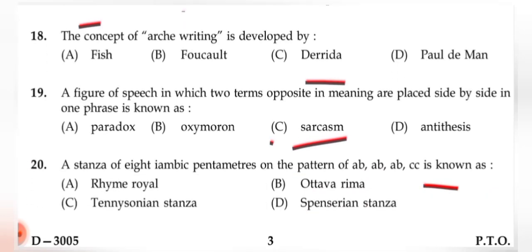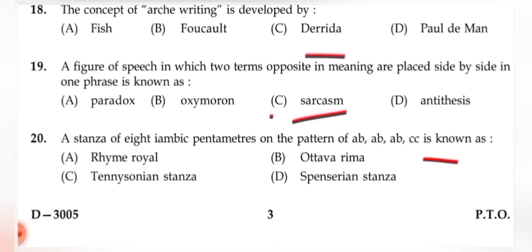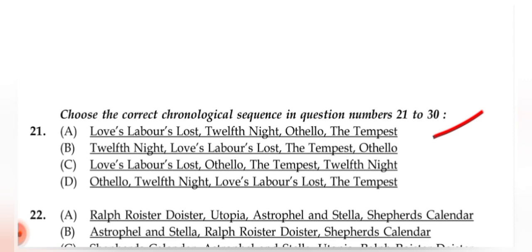Question 19: A figure of speech in which two terms opposite in meaning are placed side by side in one phrase is known as — the correct answer should be (B) oxymoron, but the speaker says (C) sarcasm — please verify. Question 20: A stanza of eight iambic pentameters on the pattern ABABAB CC is known as (B) ottava rima.